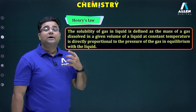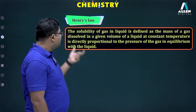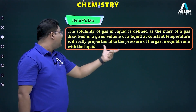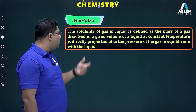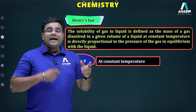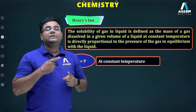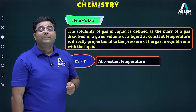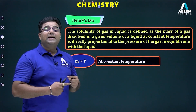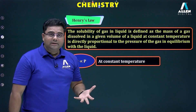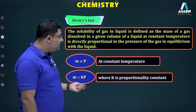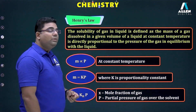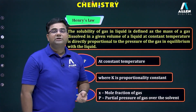Next is Henry's Law. The statement is: the solubility of a gas in liquid is defined as the mass of gas dissolved in a given volume of liquid at constant temperature, and it is exactly proportional to the pressure of the gas in equilibrium with the liquid. This gives us m = kP, where k is the proportionality constant. The key formula is x = k_H × P, where x is the mole fraction of the gas and P is the partial pressure of the gas.